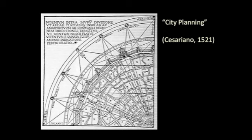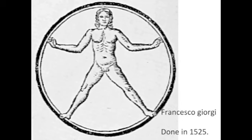The radial thing Vitruvius is probably most famous for is the concept of the Vitruvian Man — a description of the correspondence between the disposition of the human body and two basic geometrical figures: the circle and the square.